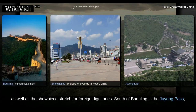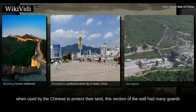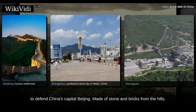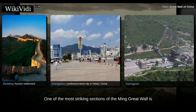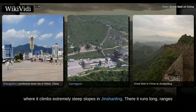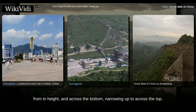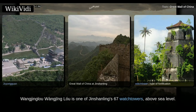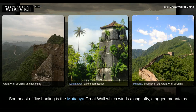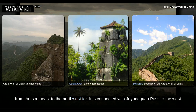The Badaling Great Wall near Zhangjiakou is the most famous stretch of the wall, as it was the first section open to the public in the People's Republic of China and the showpiece stretch for foreign dignitaries. South of Badaling is the Juyong Pass. One of the most striking sections of the Ming Great Wall is where it climbs extremely steep slopes in Jinshanling. Southeast of Jinshanling is the Mutianyu Great Wall, which winds along lofty, craggy mountains from southeast to northwest, connected with Juyongguan Pass to the west and Gubeikou to the east. This section was one of the first to be renovated following the turmoil of the Cultural Revolution.